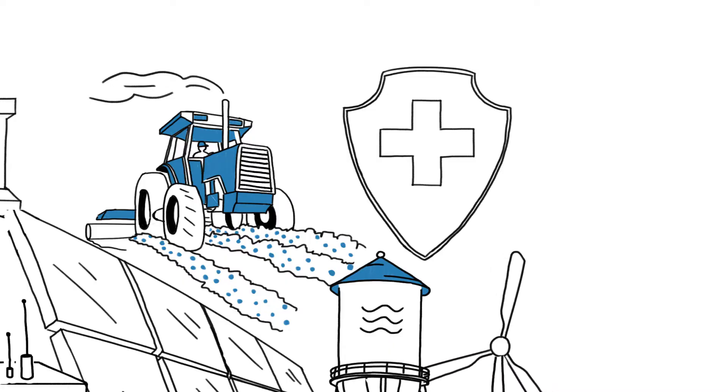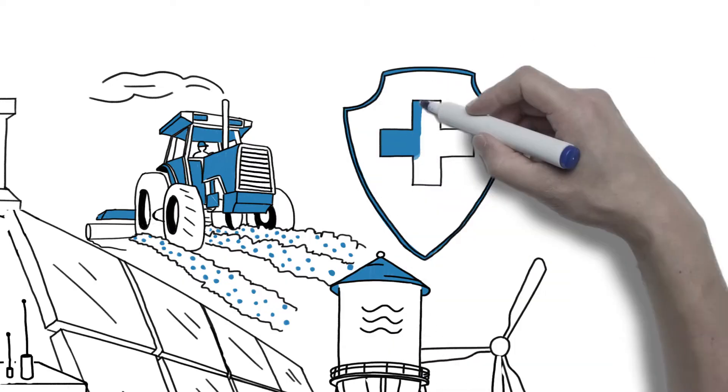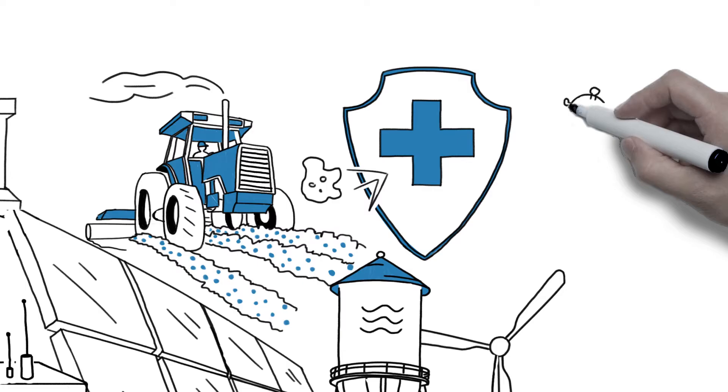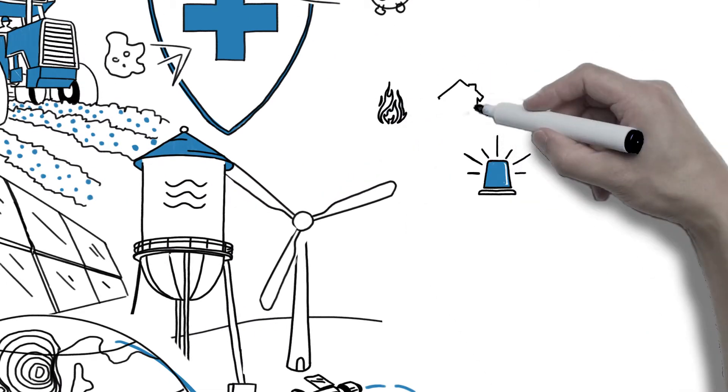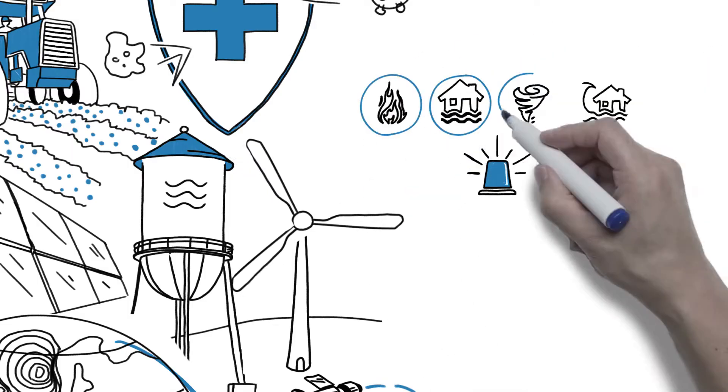Meteorologists are central to national efforts to promote public health and safety, from predicting outbreaks of air and waterborne diseases, to issuing early warnings when a dangerous storm or flood threatens to harm people and damage property.